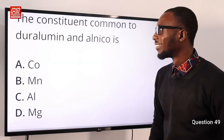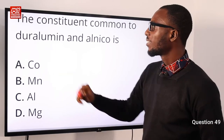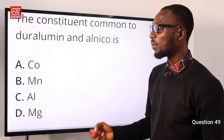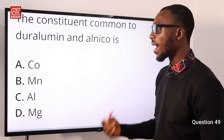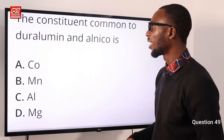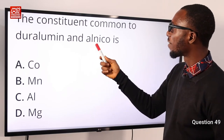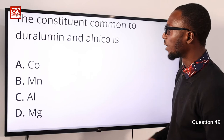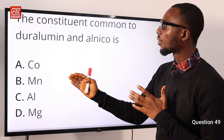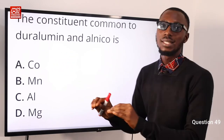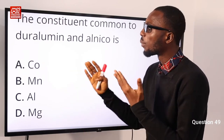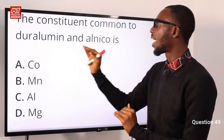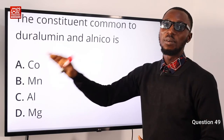Question 49: The constituent common to duralumin and alnico is aluminum. Duralumin contains aluminum, manganese, copper, and magnesium. Alnico contains aluminum, nickel, cobalt, iron, and niobium. The common constituent is aluminum (Al), so option C is correct.